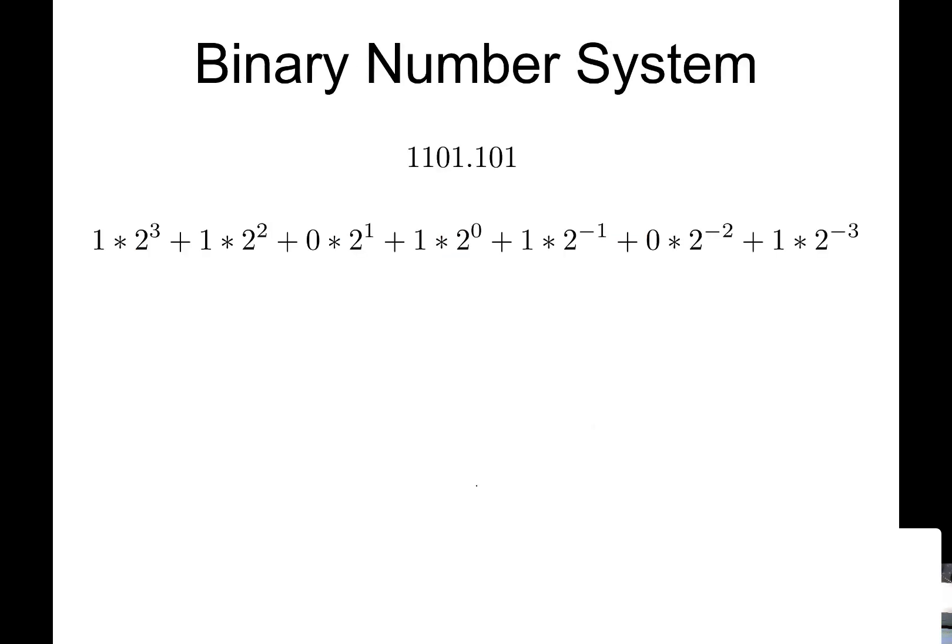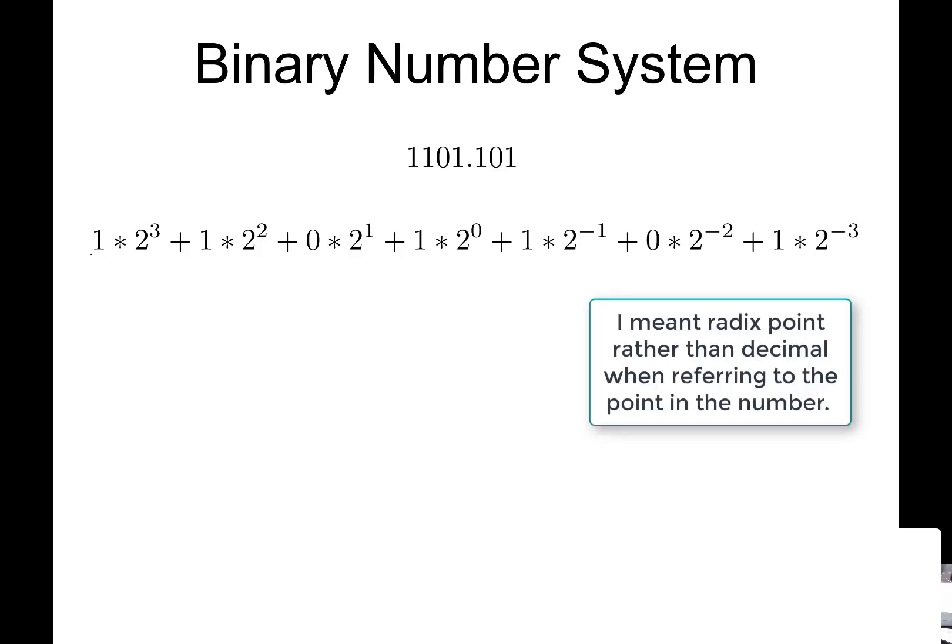So then we can do the same thing as far as writing a binary decimal number. We've already done this part of this number, so let's look at the second part. So let's actually figure out what this is. So we have, so this is the 13 that we had before, plus, and then let's go through this.